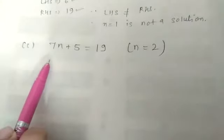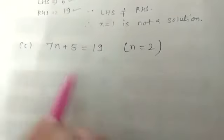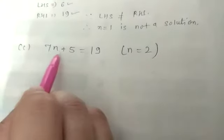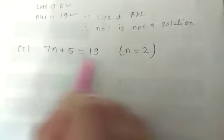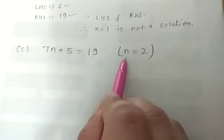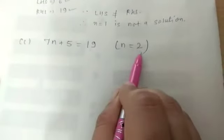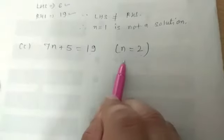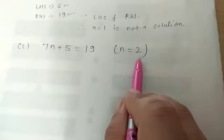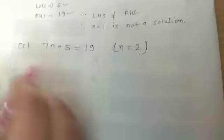Now, see the third part of question number 2. Here, 7n plus 5 is equal to 19. The value of n is 2. It means, in this question, we have to put n equals to 2.